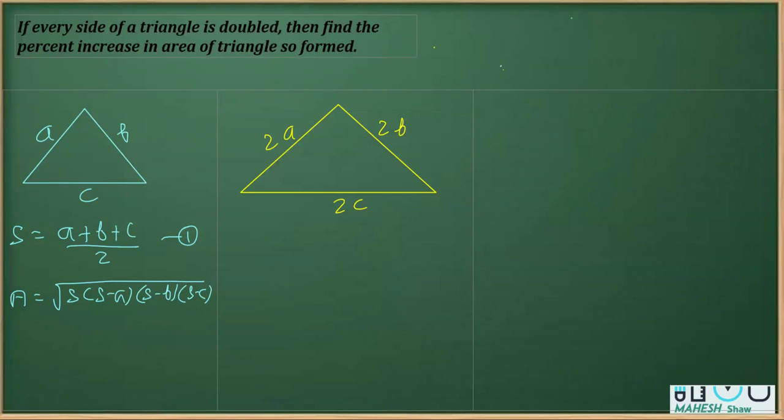And for the other part, if I take the semi-perimeter now as S dash, as you know, the sides are 2A, 2B, and 2C. So it's 2A plus 2B plus 2C, that divided by 2. Now, this is S dash. What I can see is that I can take 2 common here. And if I take 2 common, that becomes A plus B plus C, that divided by 2.